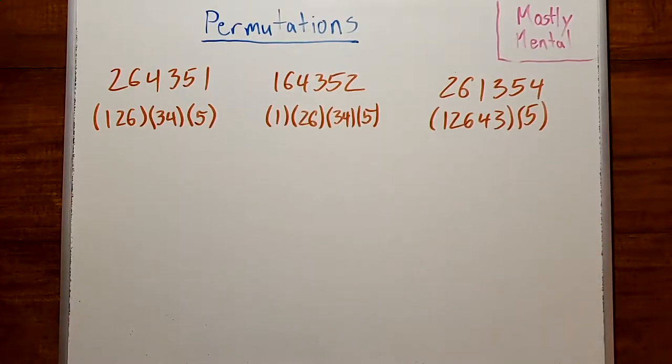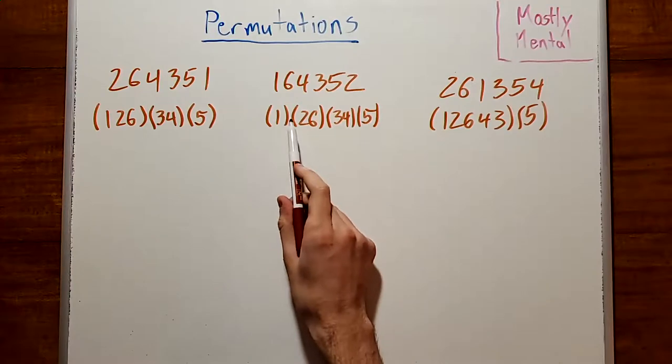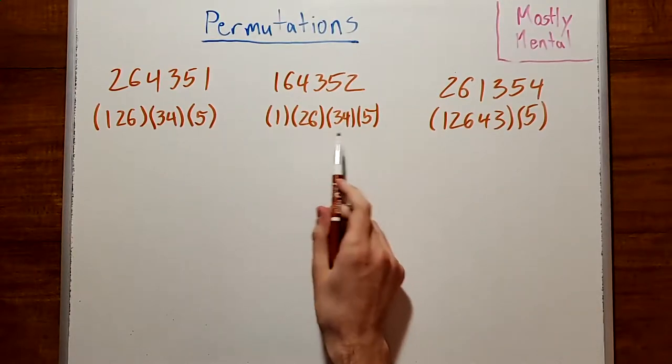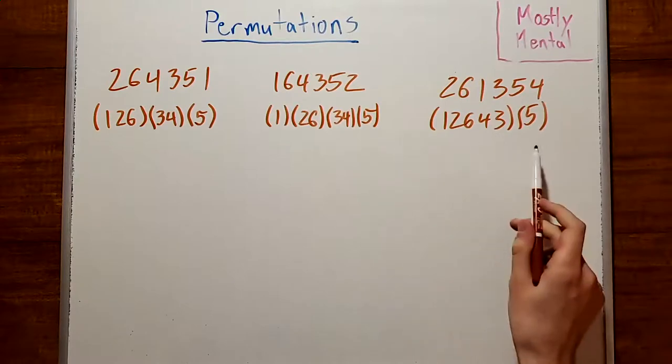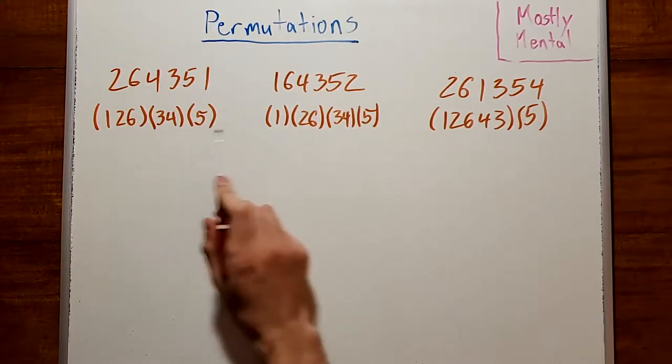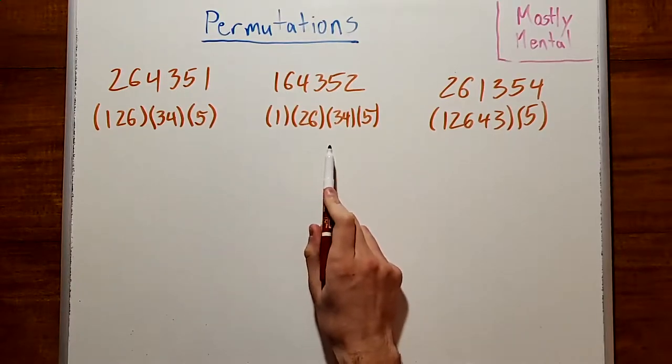But in both of these cases, notice that we've ended up with an even permutation. So here we've got two even cycles, and here we've got none. And in general, we will always change the number of cycles of even length by exactly 1, which means that we're always going to go from an odd permutation to an even permutation, or vice versa.